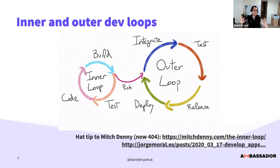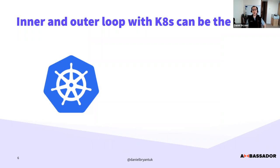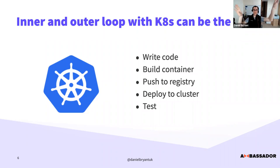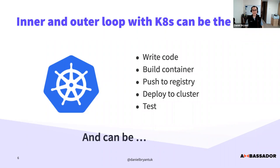The snag with Kubernetes is that the inner and outer loop often become the same. You write code, build your container, push it to a registry, deploy to a cluster on Amazon or GKE, then run tests. If you have highly coupled microservice systems, you want to test things running as another service. Having to build a container and push it up into the cluster just to test makes this inner loop very slow — it's a blocker when you're trying to iterate fast.